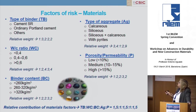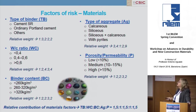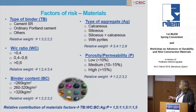With respect to materials, we have defined different parameters starting with the type of binder. We have separate sulfate-resistant cement, ordinary Portland cement, and other cements that are mainly supplementary cementitious material cements. With respect to the water-cement ratio, we have defined three intervals: below 0.4, between 0.4 and 0.6, and higher than 0.6. In each case, as I mentioned before, we have established a relative weight for each parameter.